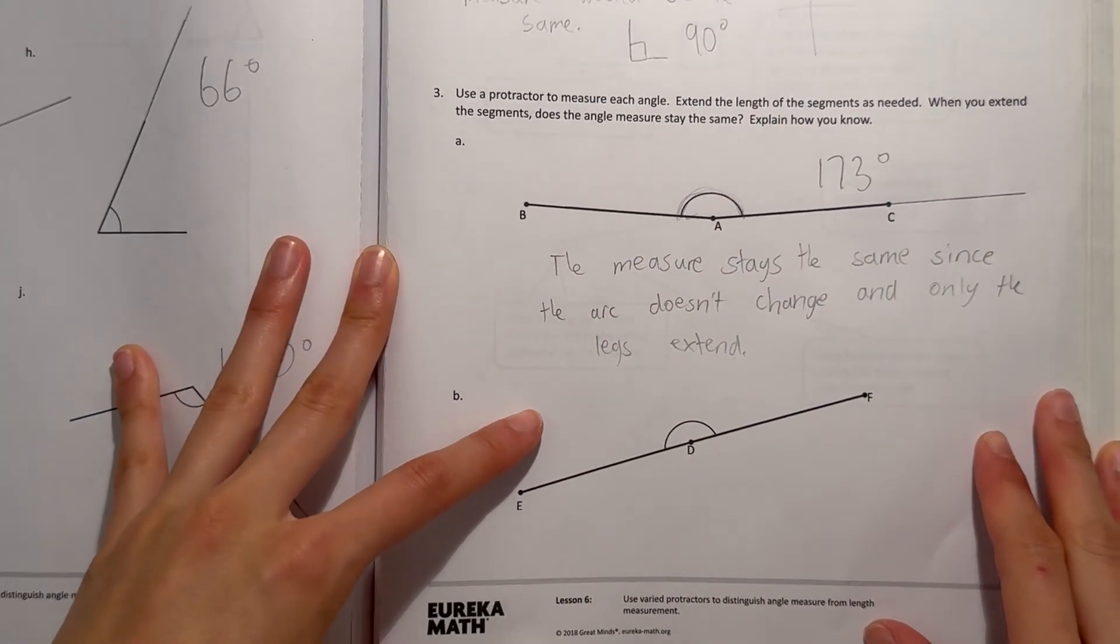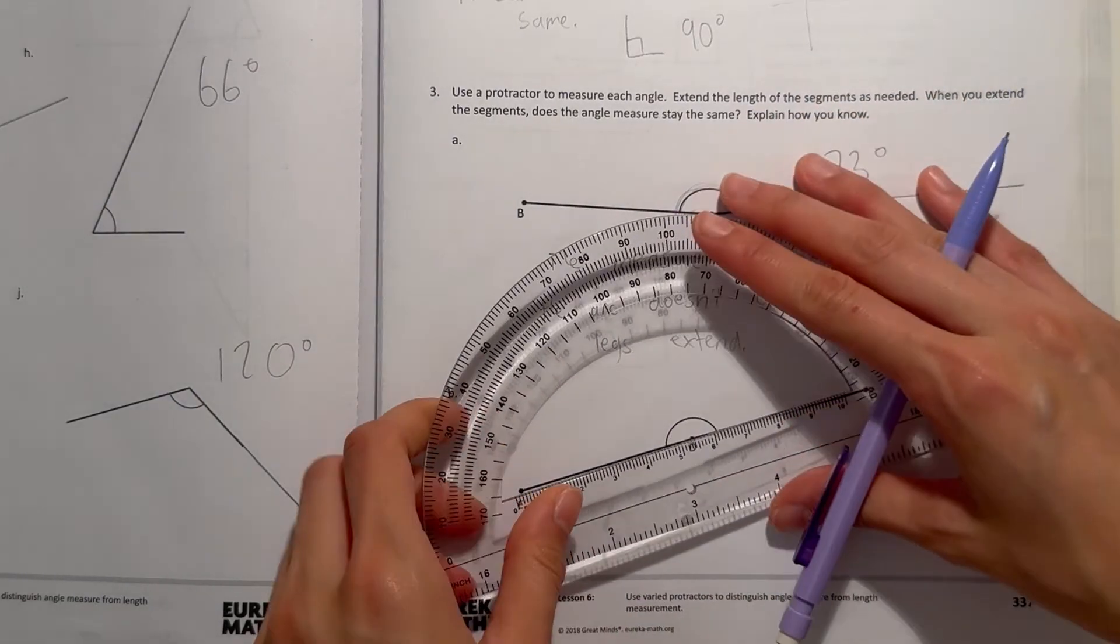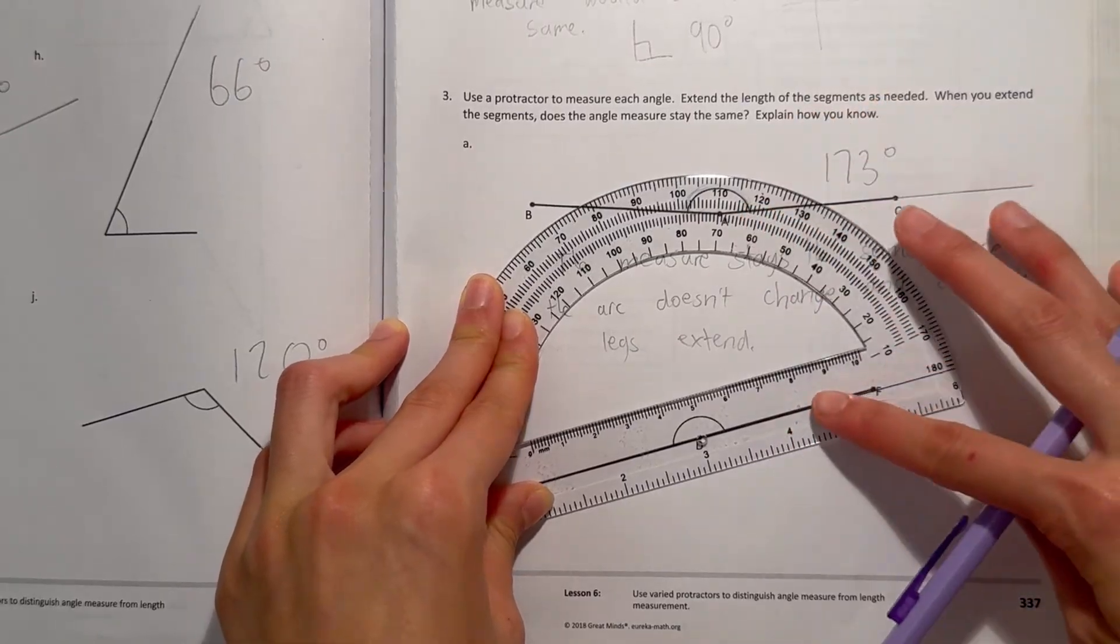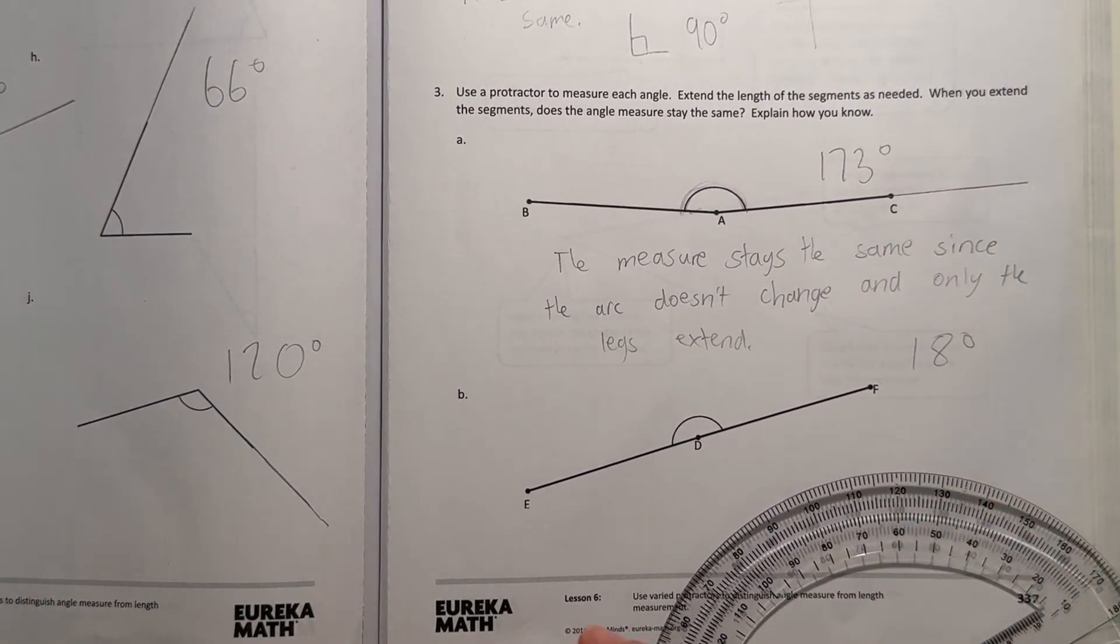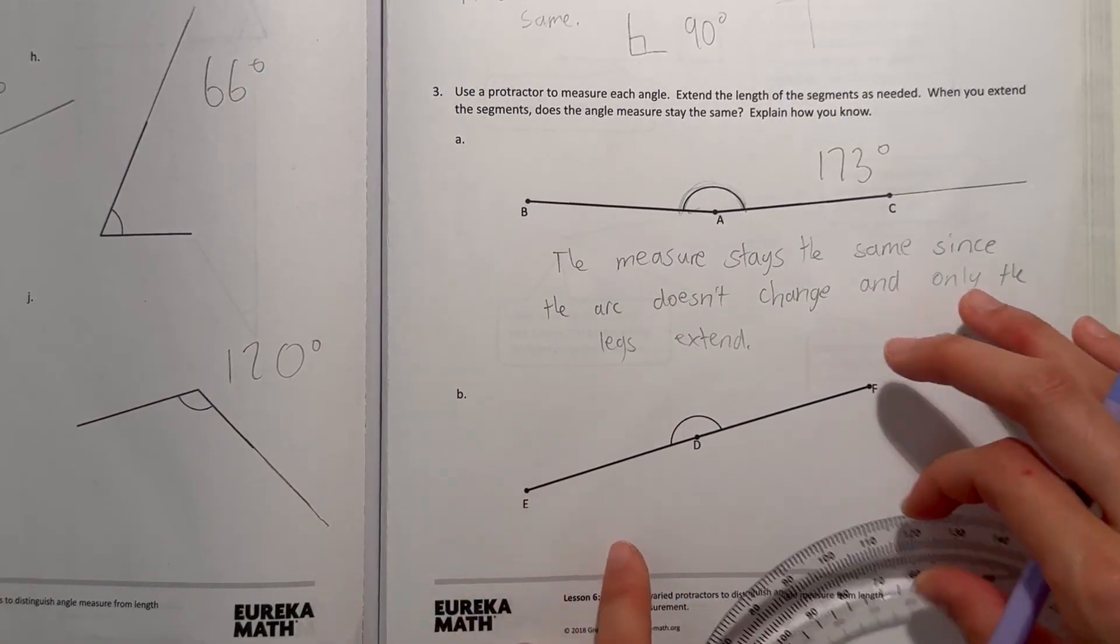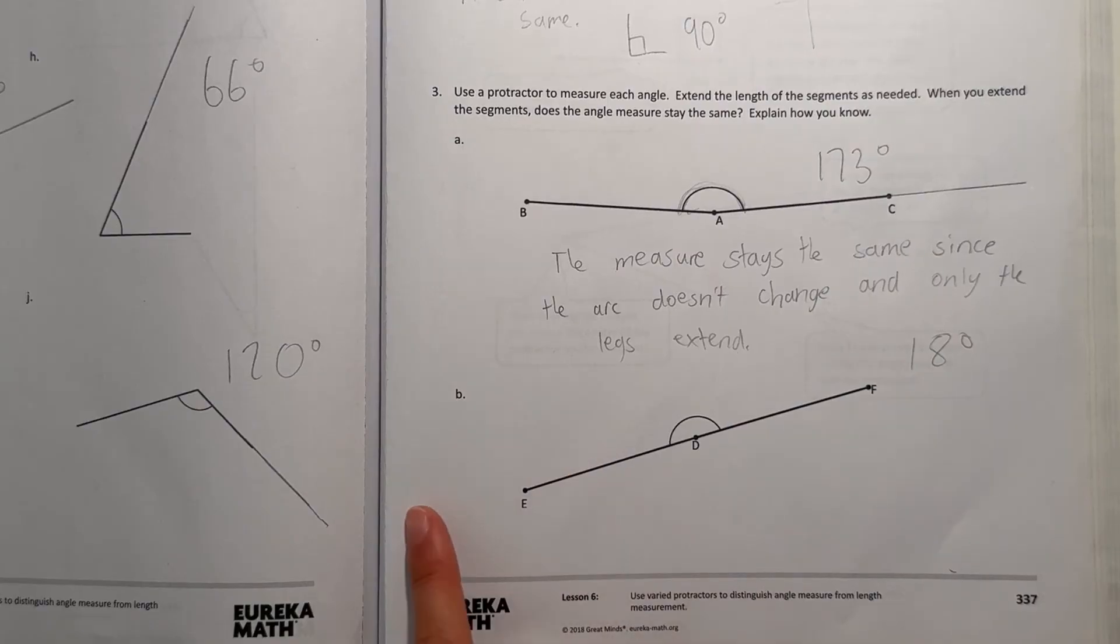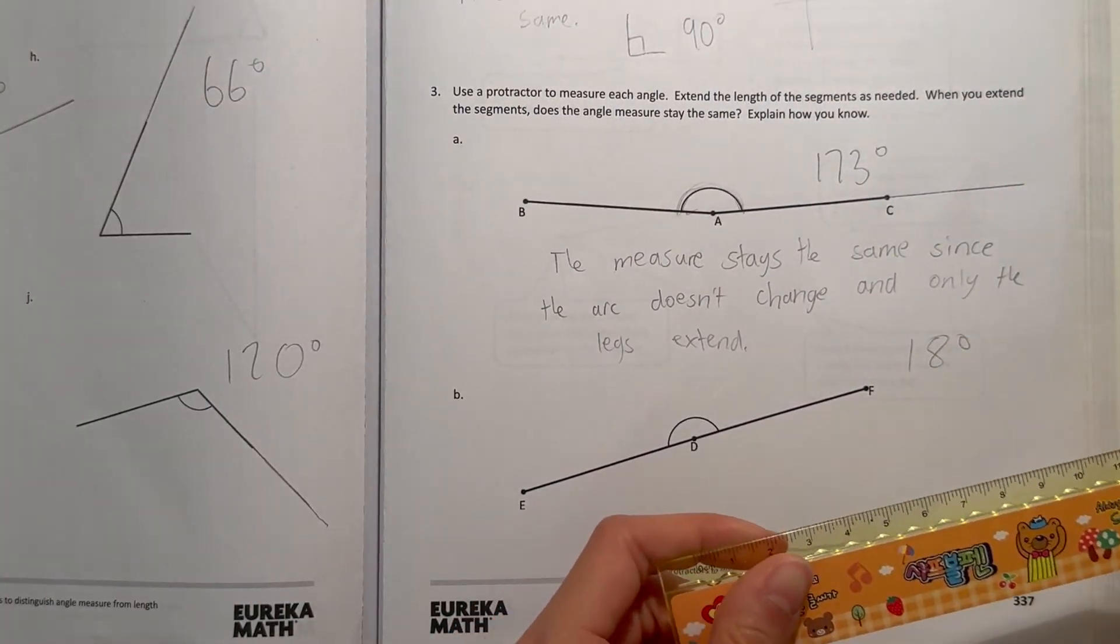Now B. This is 180 degrees, because a straight line is 180 degrees. Match it up, it's 180 degrees. And you can write the same for that one too. Stays the same because the arc doesn't change and the legs are extending.